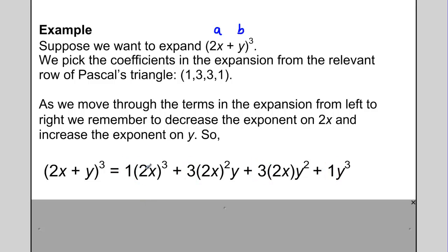Then I write the a term, which is 2x, to the exponent 3, and the next term I write it to the exponent 2, and the next term I write it to the exponent 1, and in the last term I don't include it. The b term, which in this case is the y, isn't included in the first term. I put it to the exponent 1 in the second term, then to the exponent 2, and then finally to the exponent 3.